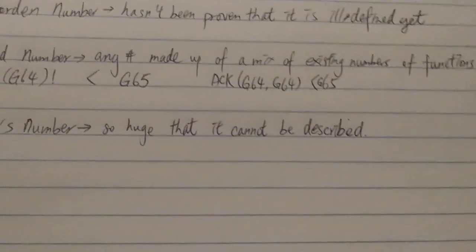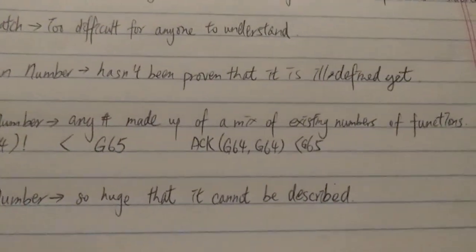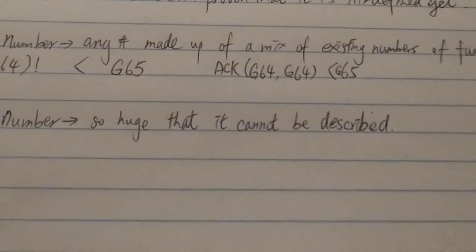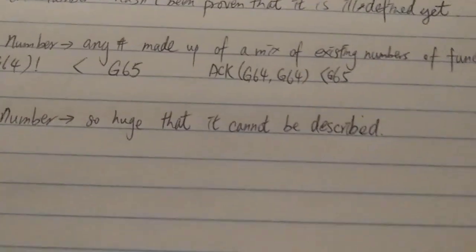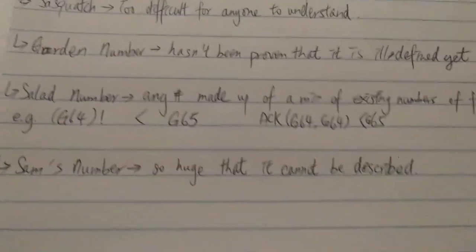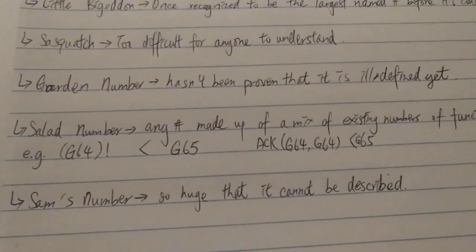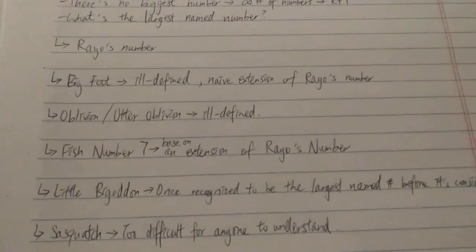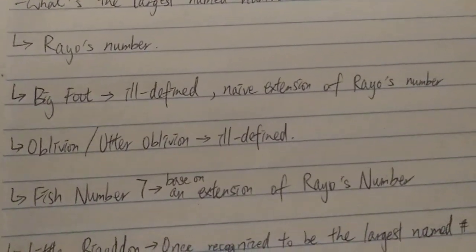This is actually like an inside joke of Googology, because this is not very well defined. It's badly defined, actually. This is basically his description: this is so huge that it cannot be described. So it's kind of like a joke number.